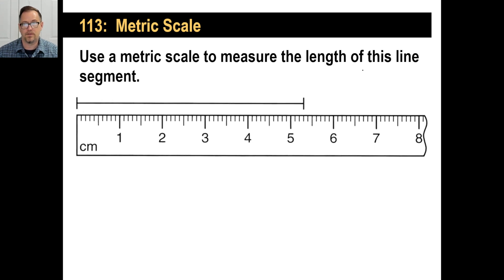So, okay. There's a line segment. You use the metric scale to measure the length of this line segment. Well, we know it's going to be five and these are all in tens. You just count the tenths. One, two, three. That'll be 5.3 centimeters.